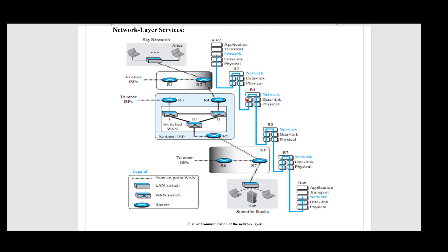Every router has three layers. The split in data link and physical layers indicates that the router is connected to two different networks. One IP address is assigned for one network side and another IP address for the other. Since a router connects multiple networks, it may have multiple IP addresses. Through this path, data finally reaches Bob.